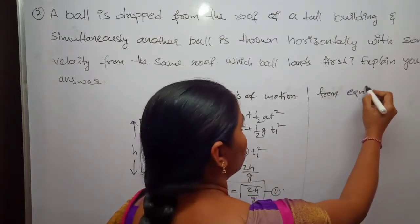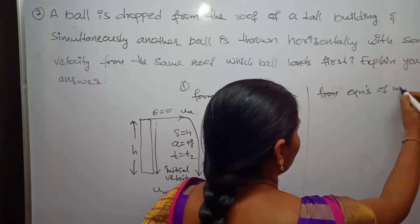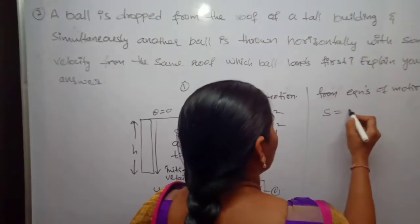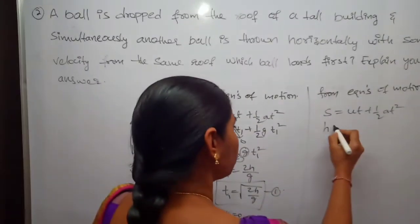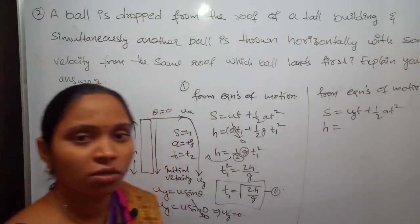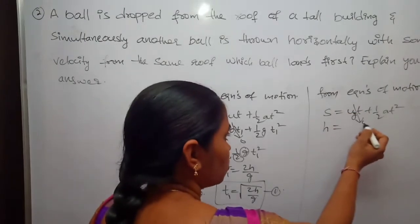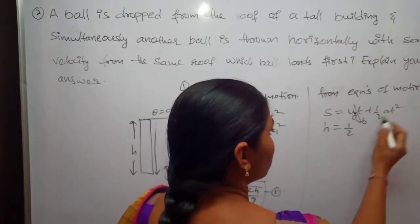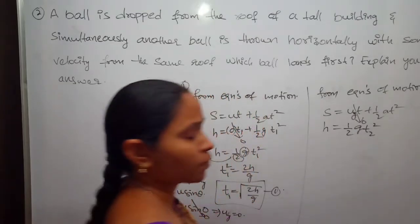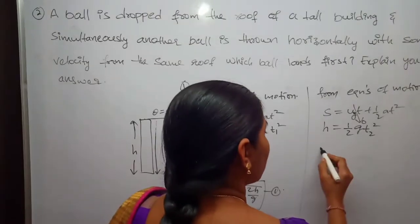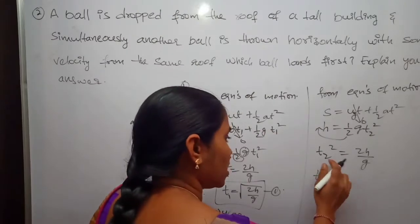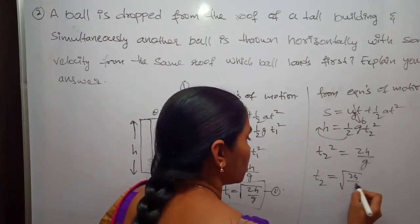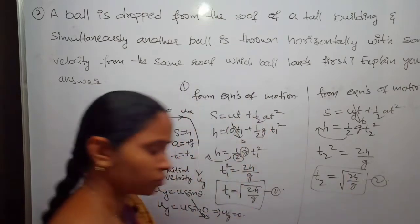Substituting this data into the equation of motion S = ut + ½at²: H = Uy·t2 + ½g·t2². Since Uy = 0, this term becomes zero, leaving H = ½g·t2². Therefore t2² = 2H/g, and taking the square root, t2 = √(2H/g). This is equation number 2.